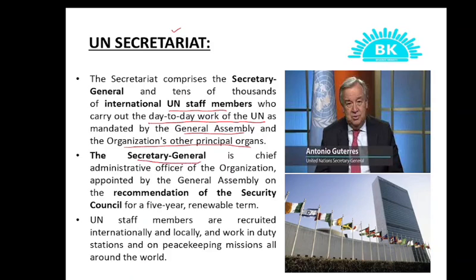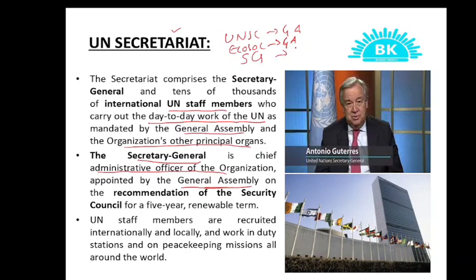Secretary General is the face of the UN. He is the Chief Administrative Officer of the organization, appointed by the General Assembly. Who elects UN Security Council members? General Assembly. Who elects Economic and Social Council members? Also General Assembly. Who appoints the Secretary General of UN Secretariat? Also General Assembly, but based on the recommendation of the Security Council. The Secretary General is appointed for a 5-year renewable term.